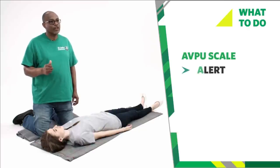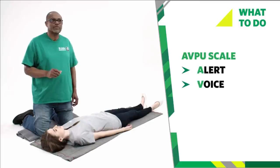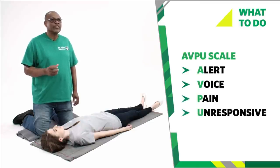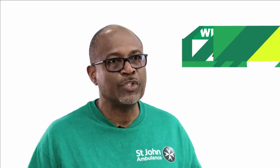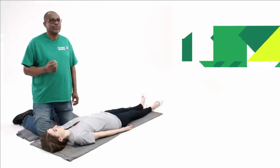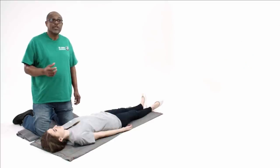We use the AVPU scale — each letter represents the casualty's level of response: A — Alert; V — Response to voice; P — Response to pain; and U — is the casualty Unresponsive to stimuli? If there is still no response, they are unresponsive. We need to check the airway. Is the casualty alert and speaking to you? Then you know the airway is clear.